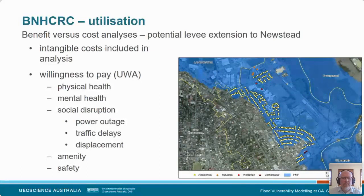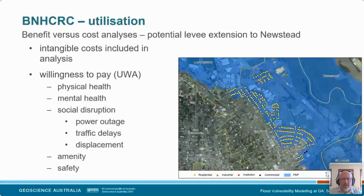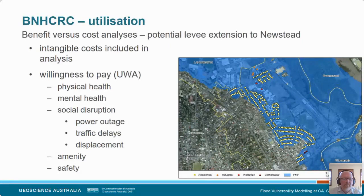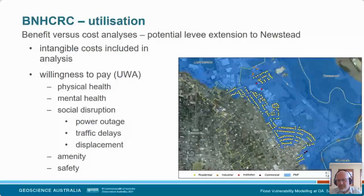Following on from that, there was potential for a levee extension into another suburb not currently protected by the levee system in Launceston — the suburb of Newstead. This is where we incorporated intangible costs in the analysis. The way we deal with intangible costs is to look at willingness to pay to avoid — so what would a resident pay to avoid the social disruption of a power outage, traffic delays, or displacement from their home? Even including those intangible costs along with all the other typical costs, it still didn't look like it was going to be a great investment to extend the levy, as the benefit wouldn't really offset the cost.